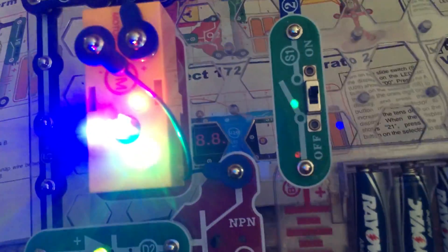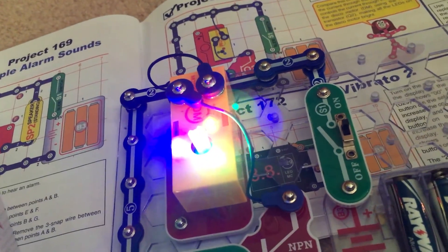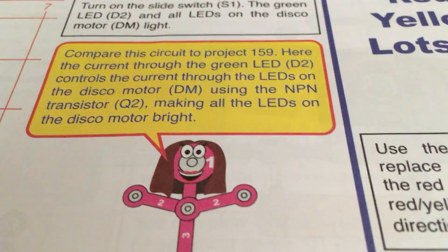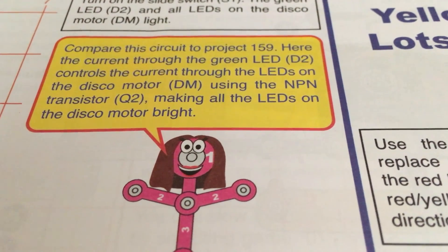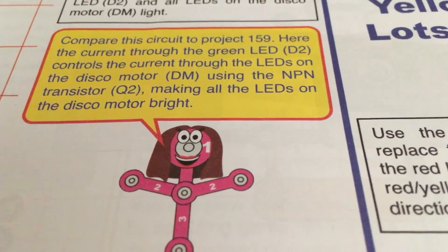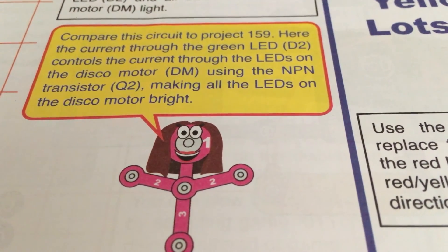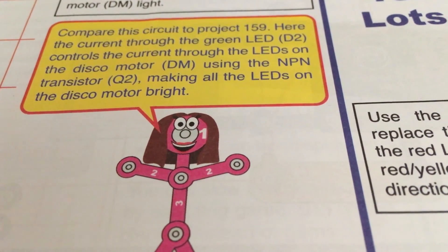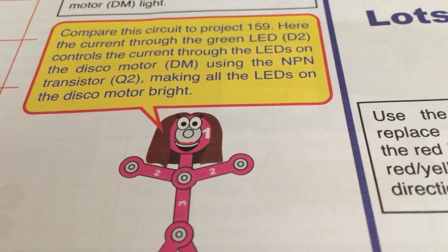The green LED as well as all the LEDs on the disco motor light up. You could compare the circuit to that in Project 159, and here the current through the green LED is controlling the current through the LEDs on the disco motor using the NPN transistor.